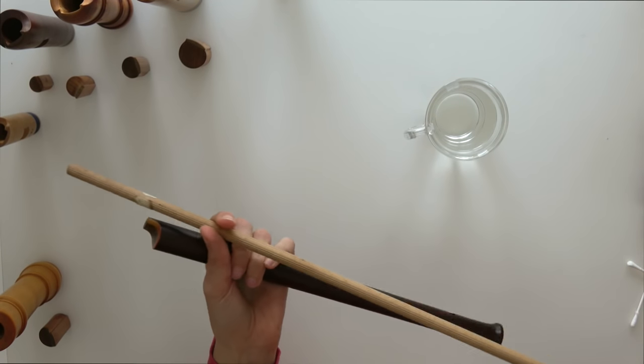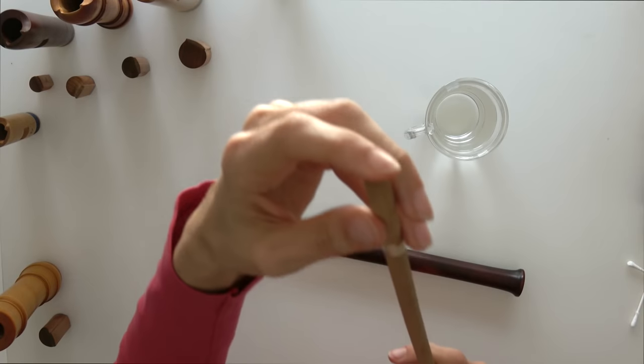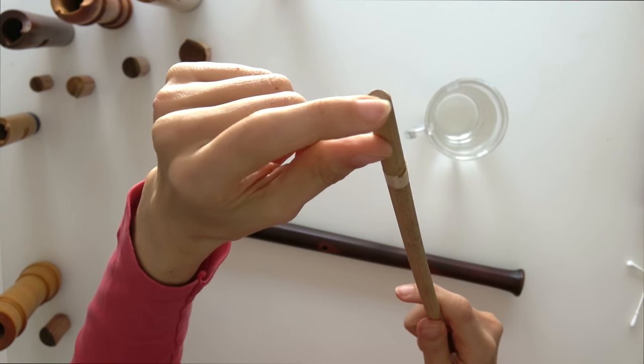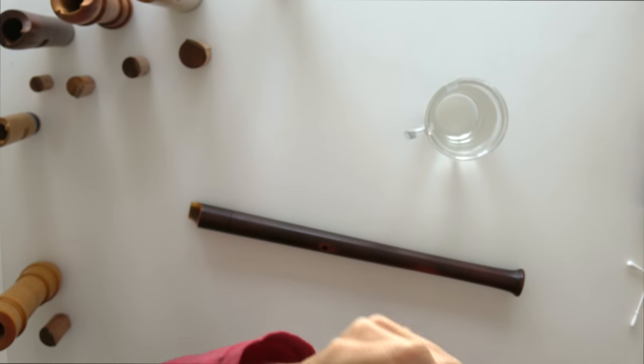Here we've got an example of a long recorder, which needs a longer stick to get the block out. The sticks you're using should have ends without any sharp edges. They should be completely smooth.